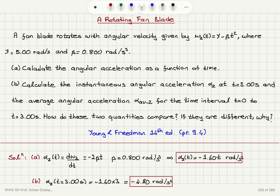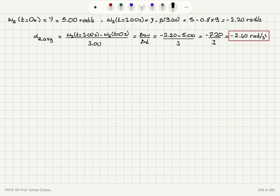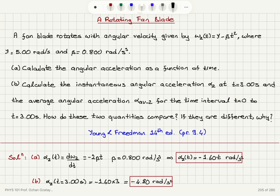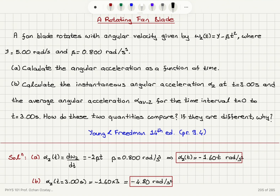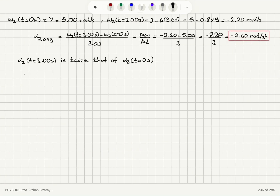Now we want to interpret this result. How do these two quantities compare, and if they are different, why? The angular acceleration at t equals 3 seconds is minus 4.8 radians per second squared, which is twice the magnitude of the average. Looking at the change in angular acceleration with time, the function is minus 1.6 t — it's a linear function. Since the angular acceleration alpha z increases linearly with time,